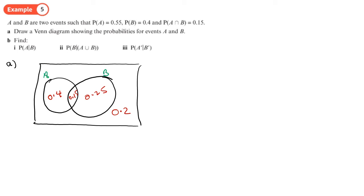Right, and straight away we've gone into something where it's asking about conditional. What's the probability of A given B? In other words, how much is in B? Well, B altogether is 0.4. And how much of all of B is A? 0.15.